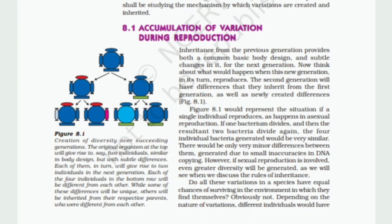Accumulation of variation during reproduction. Inheritance from the previous generation provides both a common basic body design and subtle changes in it for the next generation. Now think about what would happen when this new generation, in its turn, reproduces. The second generation will have differences that they inherit from the first generation, as well as newly created differences — Figure 8.1. Figure 8.1 would represent the situation if a single individual reproduces, as happens in asexual reproduction.